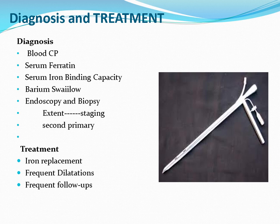Diagnosis is based on examination, history, and investigations. Signs of iron deficiency anemia: pallor of conjunctiva, koilonychia, spoon-shaped nails. Blood CP shows low hemoglobin, low MCV — hypochromic microcytic anemia. Serum ferritin will be low, serum iron binding capacity will be high, and barium swallow shows webs at the upper end of the esophagus.